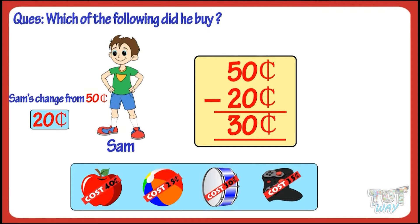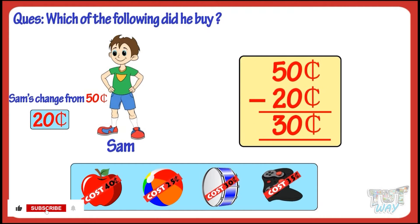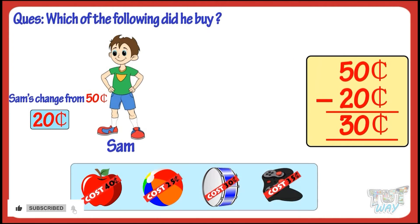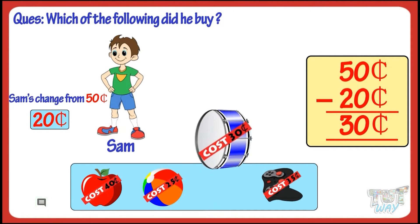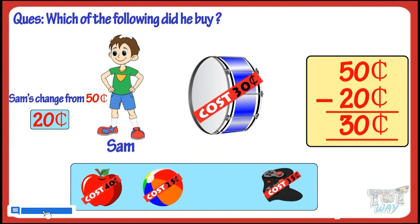So Sam spent 30 cents. Now see which of the following things cost 30 cents. The toy drum costs 30 cents. So Sam bought this drum. We got it!